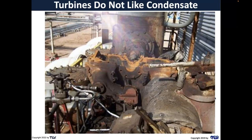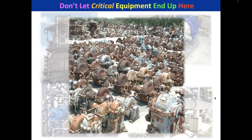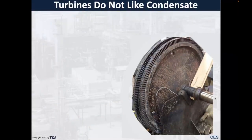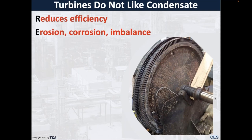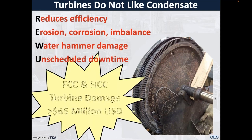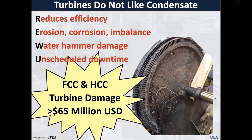We want to avoid catastrophic damage such as a turbine that has lost its top, get turbines out of the graveyard, and cut back on precipitation causing imbalance, reduced efficiency, erosion corrosion, water hammer damage, and unscheduled downtime. What prompted this presentation: a refinery in the distillation experts conclave didn't pay attention to their trap population for about four years. Their turbines were knocked out in a single event — the FCC and HCC turbines — shutting down the unit. They said it was over 65 million dollars; we estimate 100 to 160 million dollars of loss.